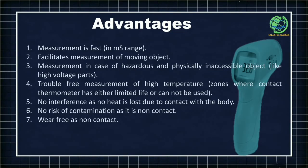Now, what are the advantages of infrared thermometers? Infrared thermometers are really fast — they can measure temperature in milliseconds, while RTDs or thermocouples can measure temperature in multiples of seconds only. They can also be used to measure the temperature of moving objects. In case of hazardous or physically inaccessible areas like high voltage parts, infrared thermometers are quite useful. In very high temperature zones where contact thermometers have very limited life or cannot be used at all, infrared thermometers are also very helpful.